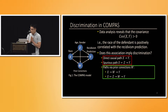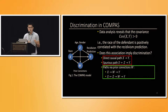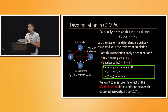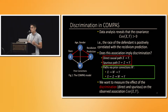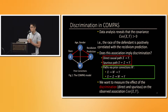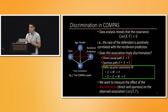By law, it is allowed to use prior convictions W of the defendant, because it is such a critical feature for this prediction task. We are interested in measuring the effect of discriminations — marked in red — on the observed association COV(X,Y). If the effect is significant, then we can say there could be some discrimination in the system; otherwise, we can say the system is fair.